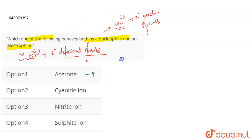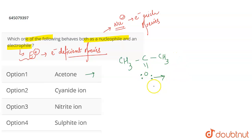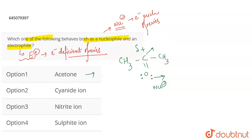If we talk about acetone, acetone is CH₃-C(=O)-CH₃. Here, oxygen has two lone pairs of electrons on its atom, so it can donate the lone pair of electrons and therefore it can behave as a nucleophile. If you talk about this carbon attached to oxygen — oxygen is electronegative in comparison to carbon — therefore carbon is going to have a delta positive charge, due to which this can act as an electrophilic center. So basically, acetone can act as an electrophile as well as a nucleophile.